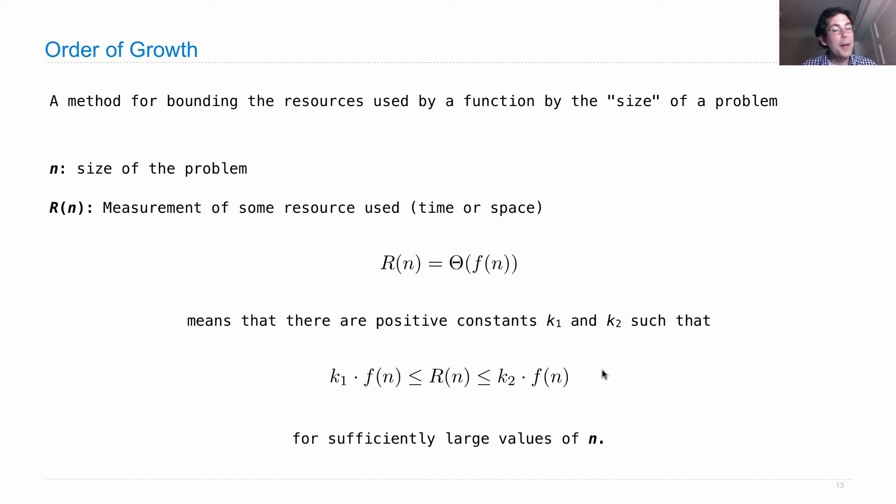So why on earth would we do something like this? Here's the whole idea. The actual resources used might be something complicated and hard to measure. What we'd like to have is a very simple function f that just, for instance, squares n or square roots n. Something very simple.